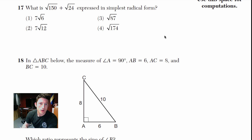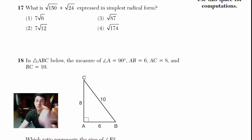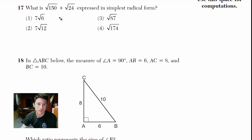Number 17: what is √150 plus √24 in simplest radical form? I look at √150 and find a perfect square factor. I know 25 goes into 150: 25 times 6 is 150. So √150 equals √25 times √6, and √25 is 5, giving us 5√6.